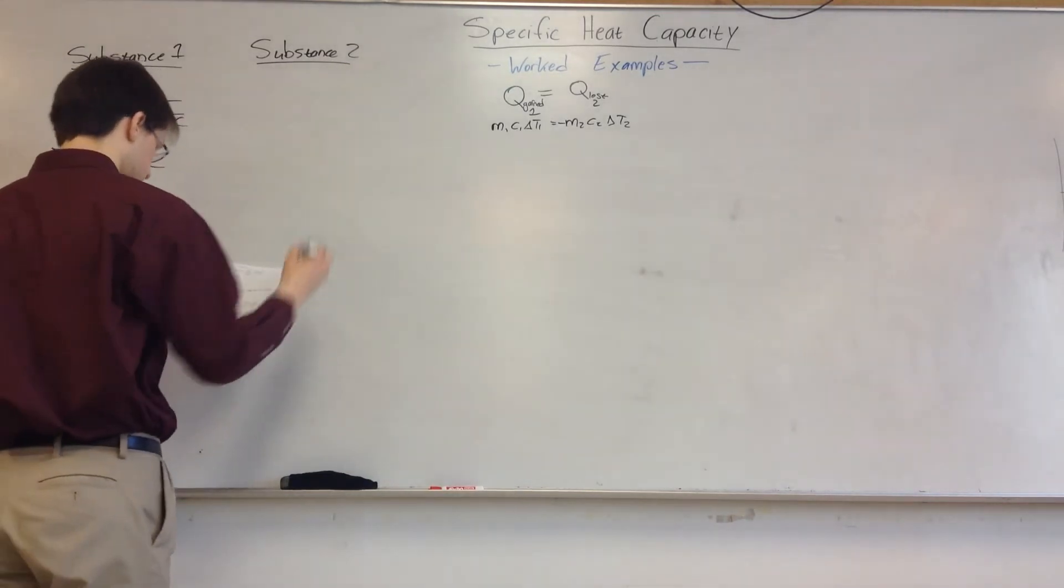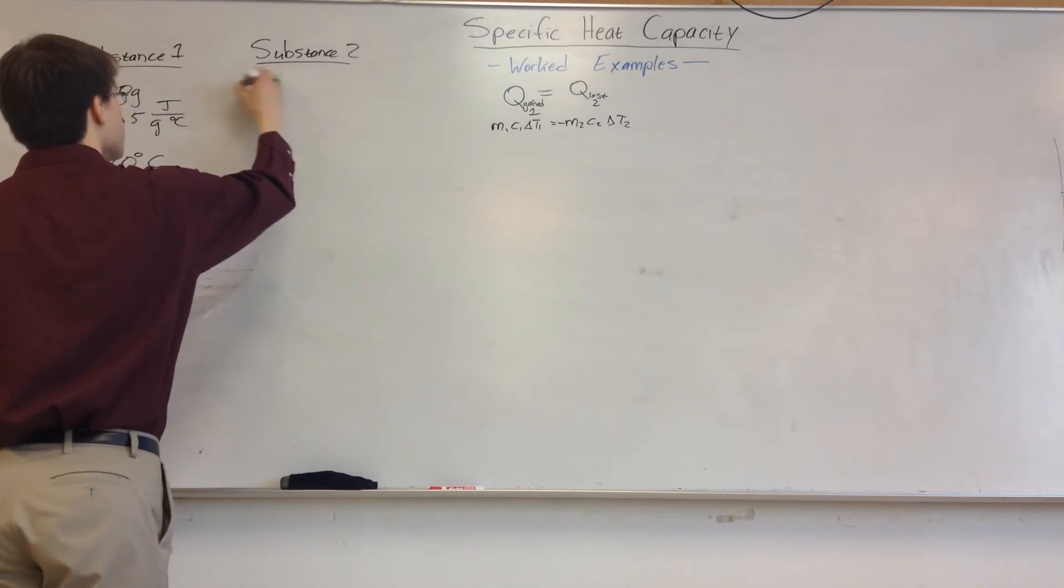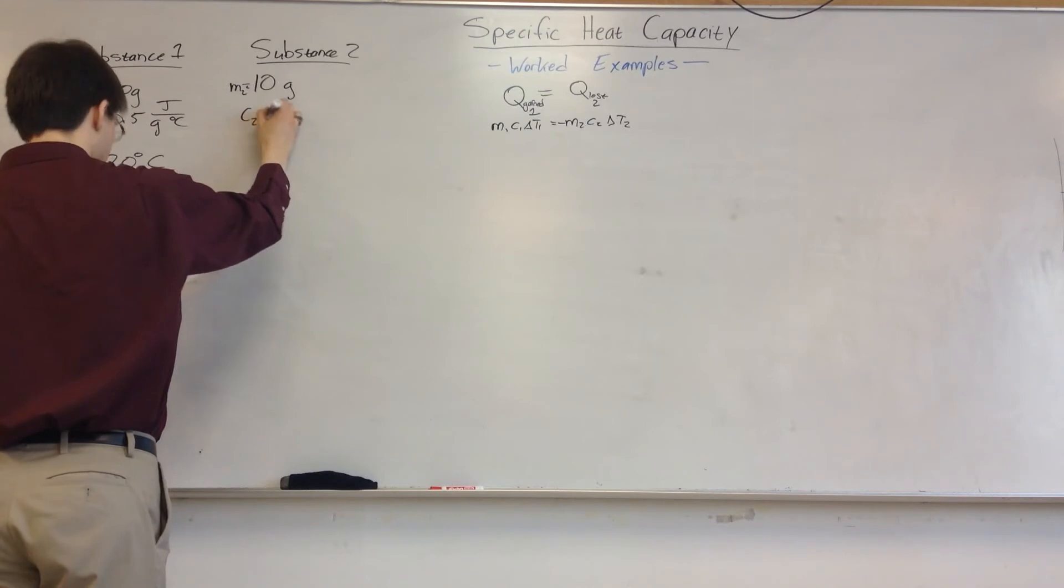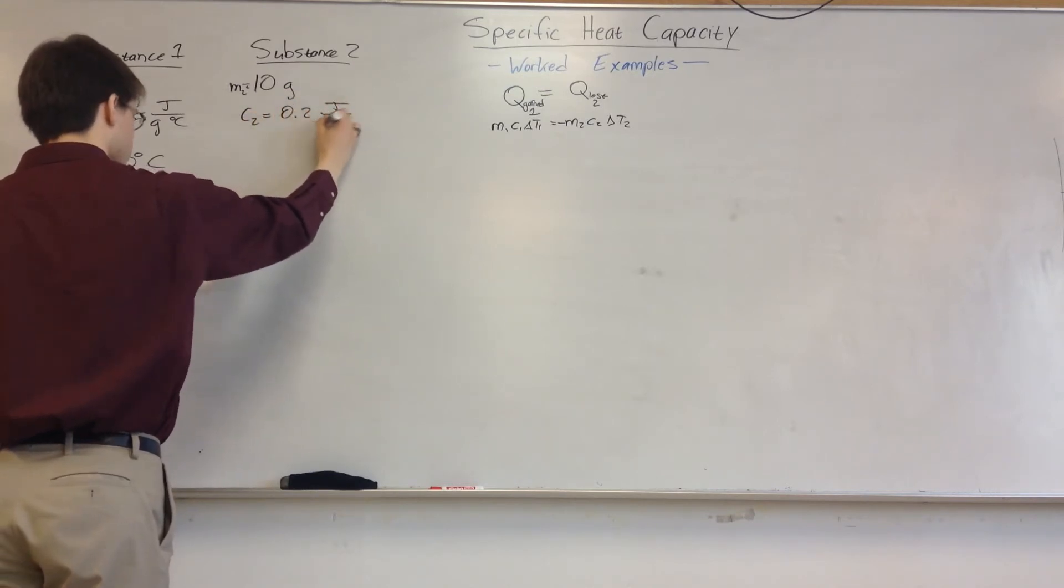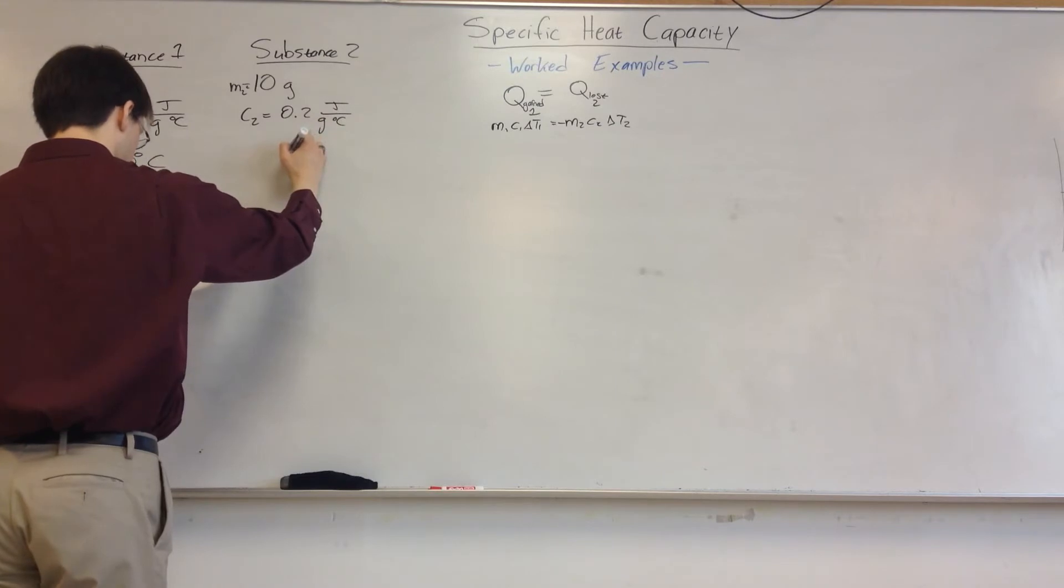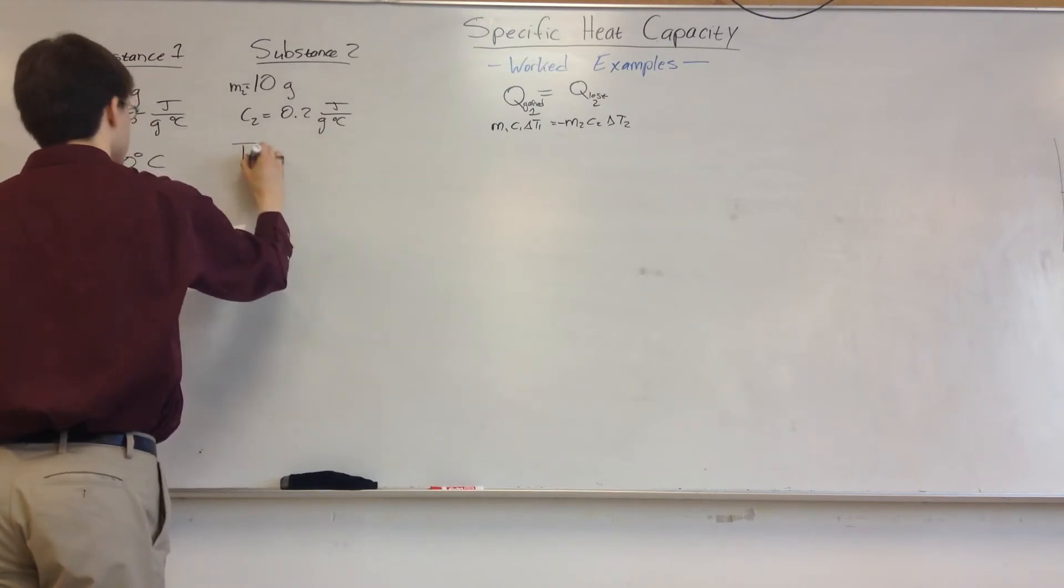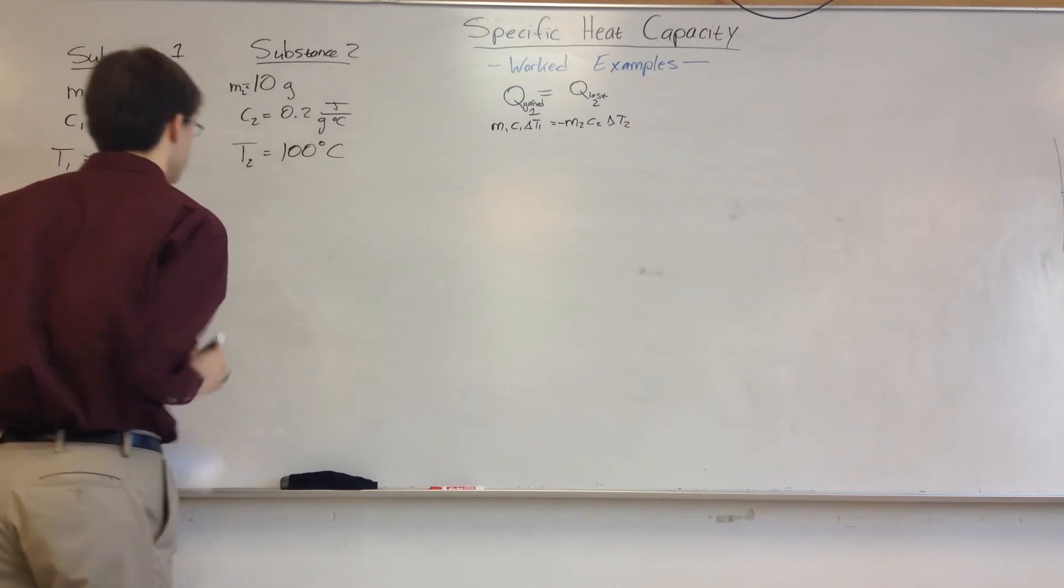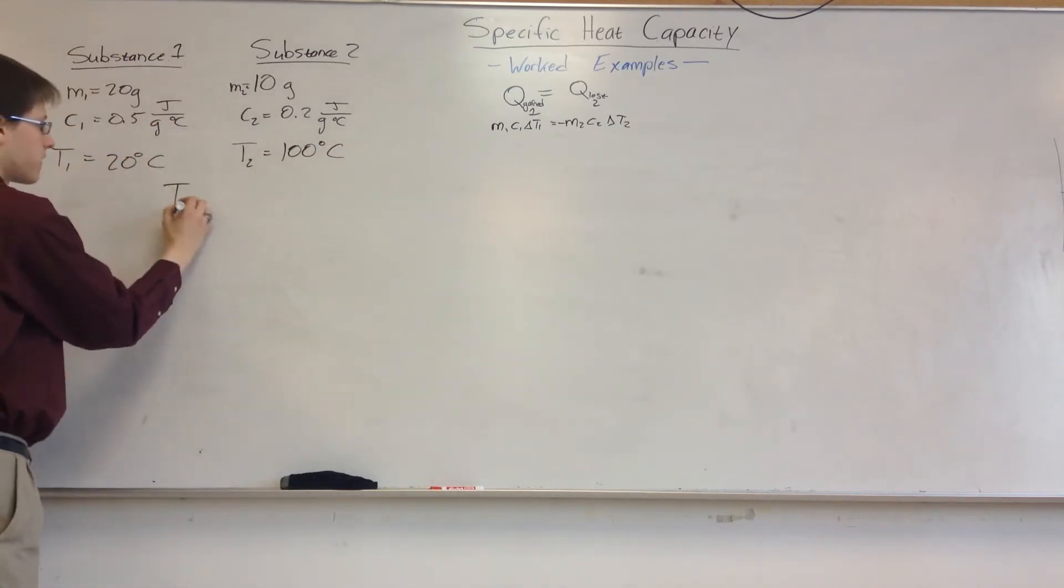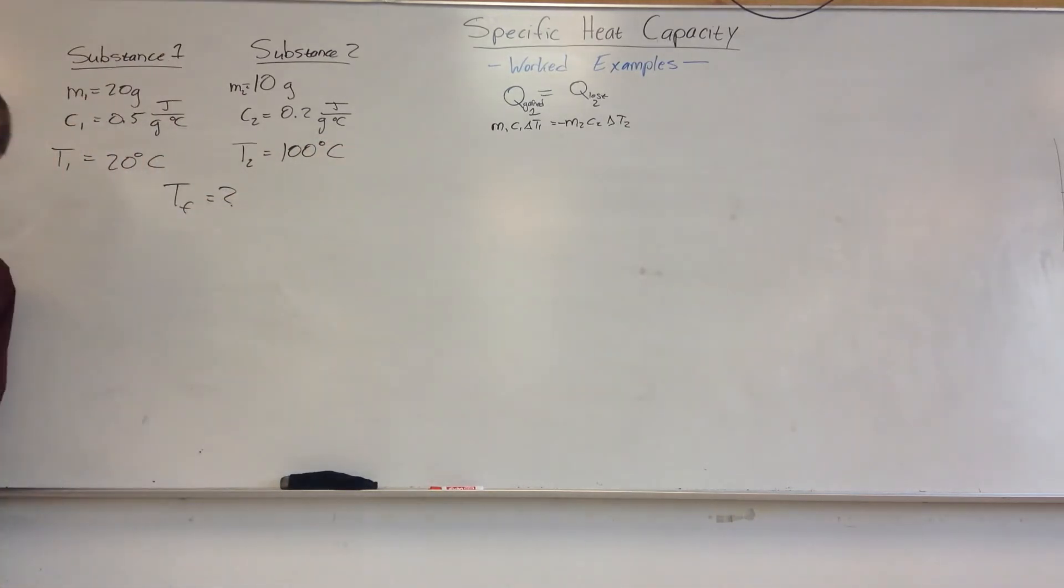Substance two will have a mass of 10 grams, it will have a heat capacity of 0.2 joules per gram degrees Celsius. And it will have an initial starting temperature T2 of 100 degrees Celsius. And I want to know, if I mix these together, what's my final temperature?